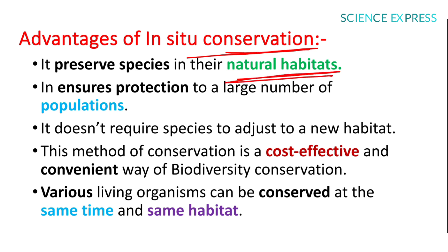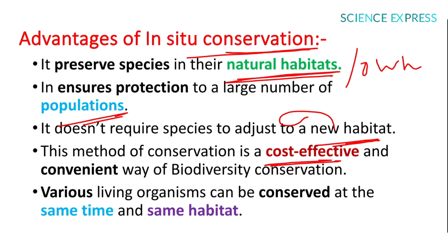Advantages of in-situ conservation: it preserves species in their own natural habitat; it ensures protection to a large number of populations; it does not require species to adjust to a new habitat; it is a cost-effective and convenient way of biodiversity conservation; and various living organisms can be conserved at the same time in the same habitat.